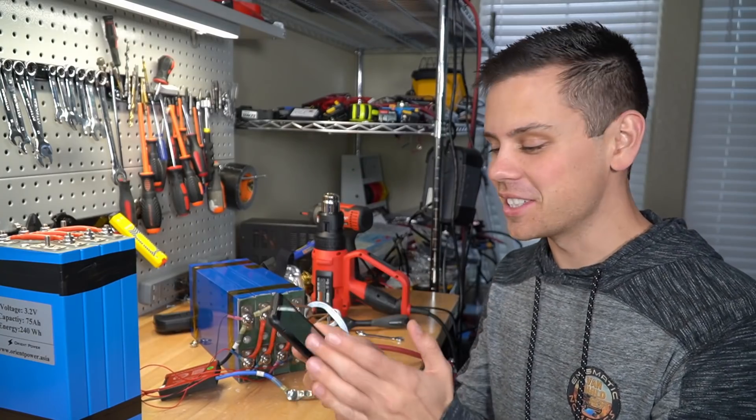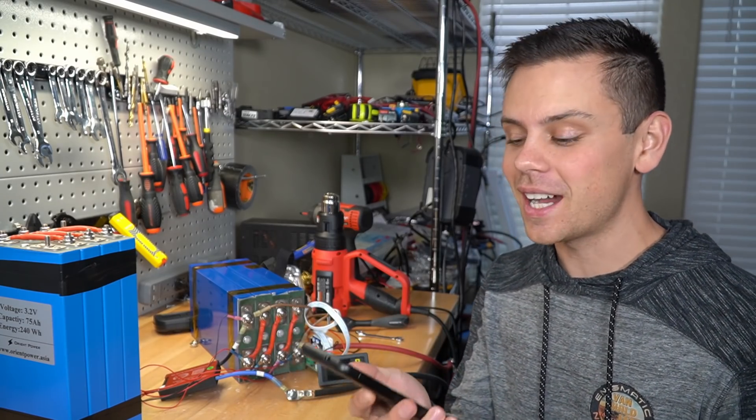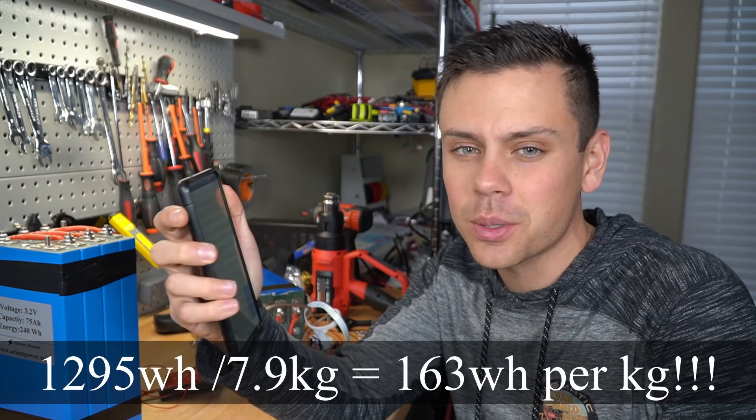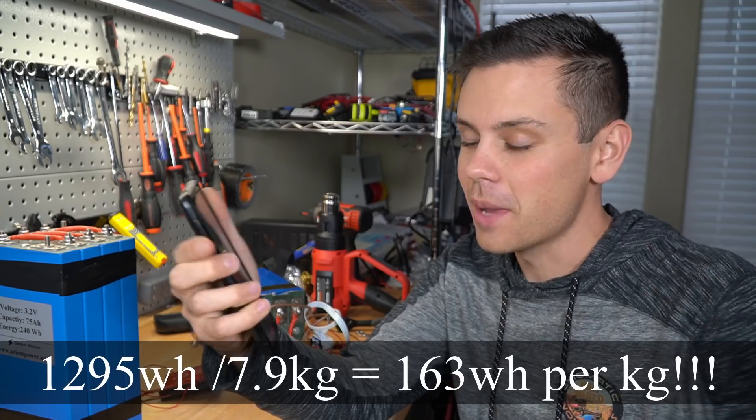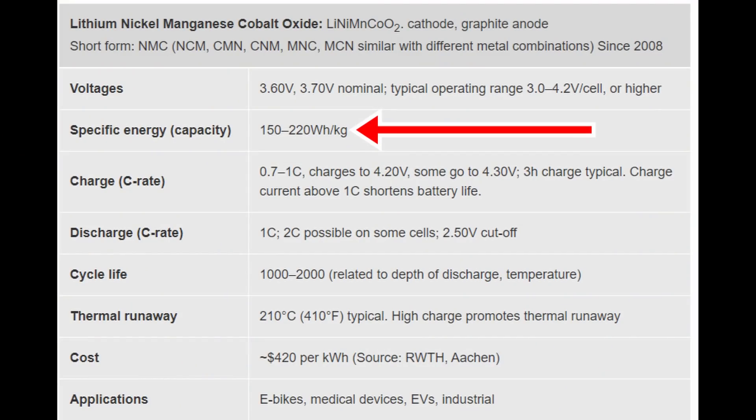So if we take 1295 watt hours and we divide it by 7.92 kilograms, we get a specific energy of 163 watt hours per kilogram. That's practically the same specific energy as many NMC variants. That is crazy. That is incredible. We need to find out where they bought these cells.